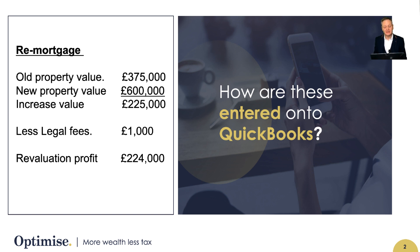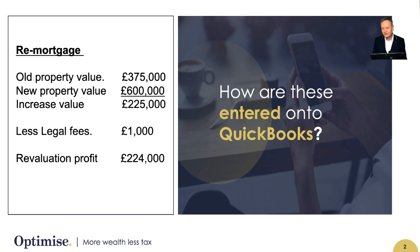What that means is that you might have a property that was worth £375,000, but then it's gone up in value to £600,000, which shows an increase of £225,000. You may have refinanced that property to ultimately get money out of the equity. Now there will be a legal fee associated with that of £1,000, which gives you a profit which is not taxable, but it does need to be shown in the profit and loss account because of the restated financial statements to show this revaluation of £224,000 that now needs to sit on the profit and loss.